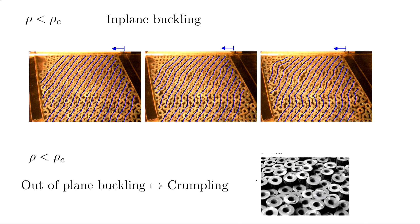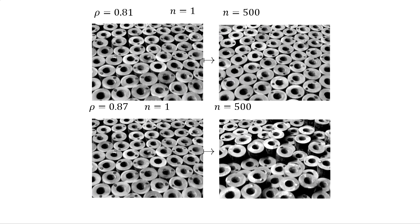To illustrate: you start with a random configuration, n equals one. You bang it 500 times and compactify. Below the critical density, you don't see any out-of-plane motions - it's compact but shows shear banding. There's a small region where you don't see shear banding.